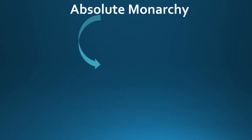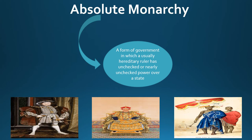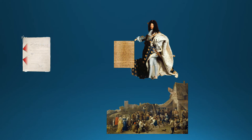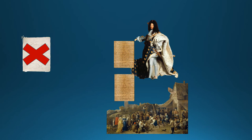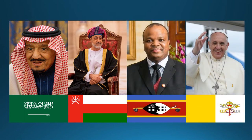An absolute monarchy is a form of government in which a usually hereditary ruler has unchecked or nearly unchecked power over a state. Historically, monarchs in absolute monarchies had no constitution to check their power and could make laws for their people yet break them themselves with no accountability. In recent years, some nations have established constitutions and created parliaments, but the monarch still has nearly total control. Present examples of absolute monarchies are Saudi Arabia, Oman, Eswatini (previously known as Swaziland), and Vatican City.